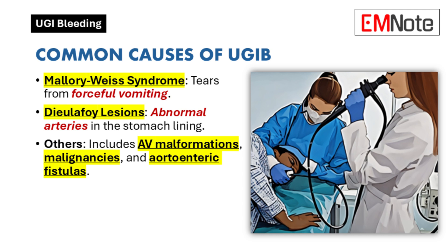Other less common causes include arteriovenous malformations, malignancies, and aortoenteric fistulas. The latter often presents as a herald bleed, characterized by hematemesis or hematochezia, which may temporarily resolve. Dieulafoy lesions are abnormally large arteries that protrude through the submucosa, commonly found along the lesser curvature of the stomach near the gastroesophageal junction.